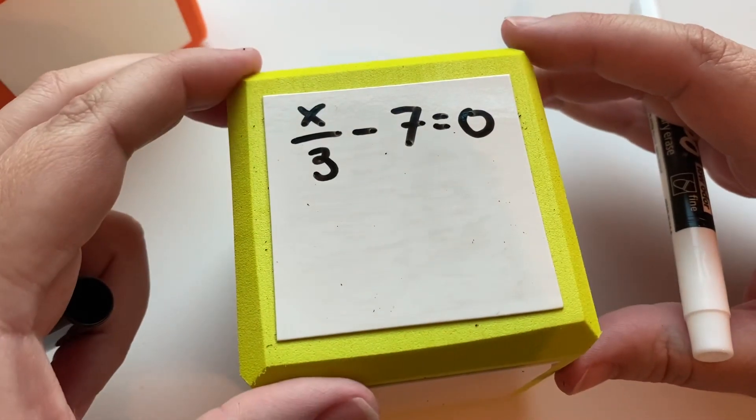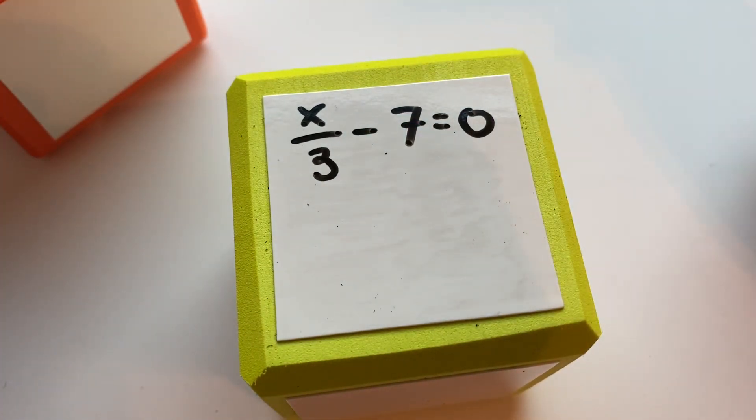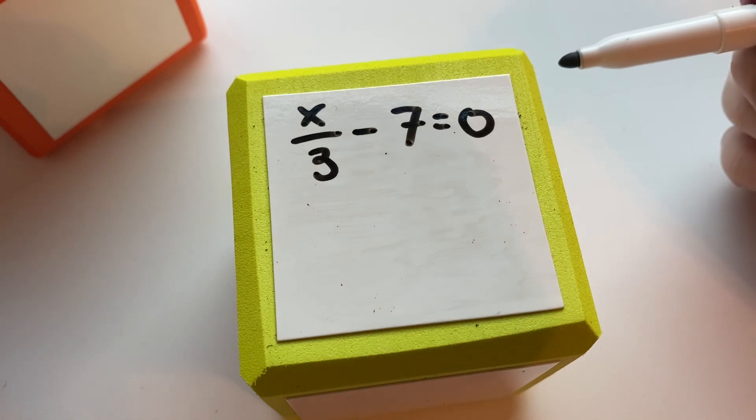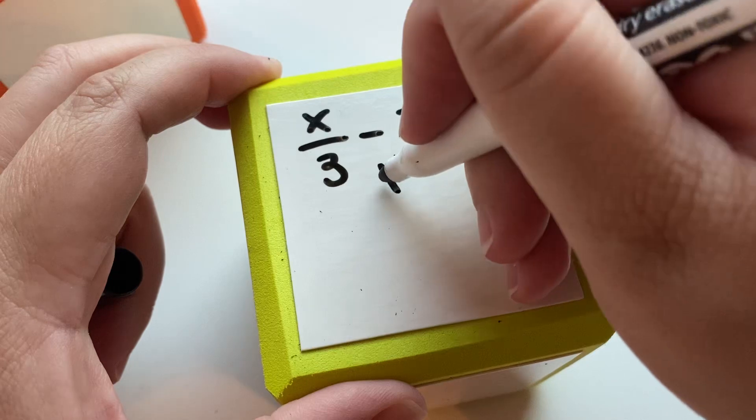And then here we have two operations again. We have our division and our subtraction. So we're going to start with which one? You're right. Subtraction. So we're going to do the inverse operation.